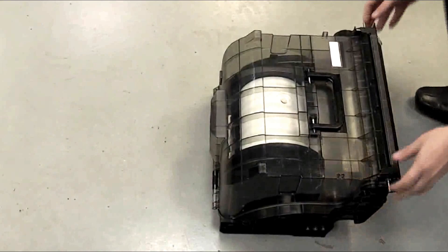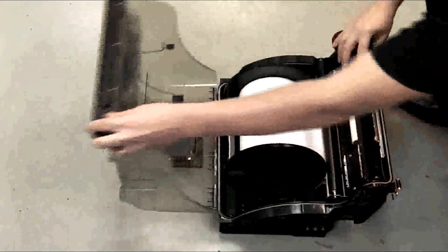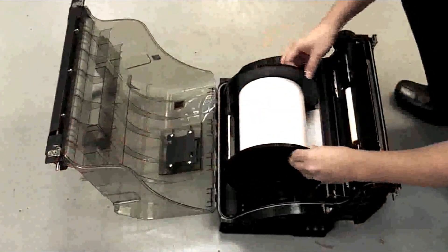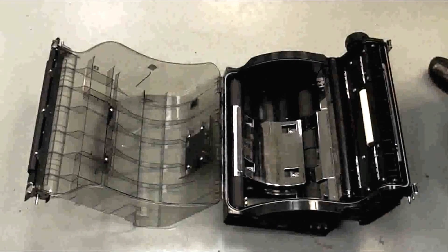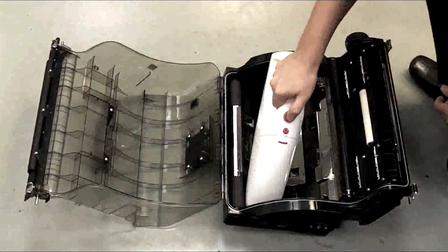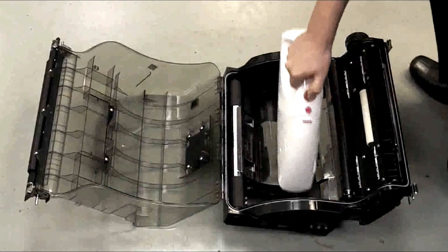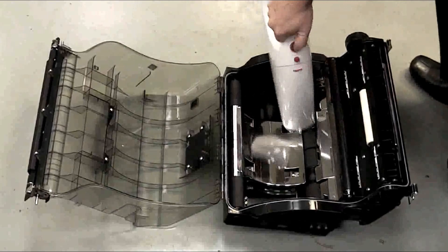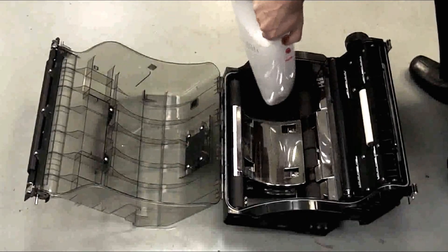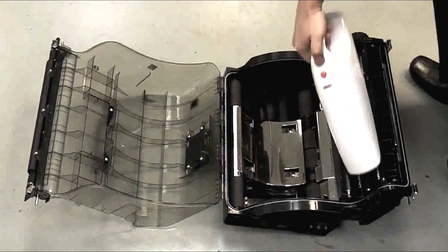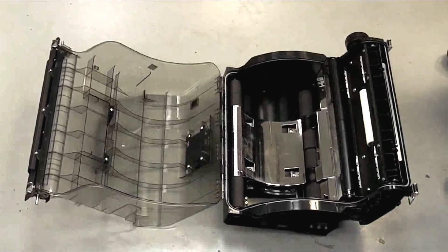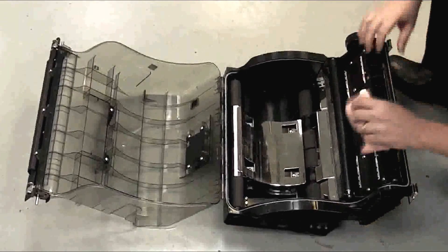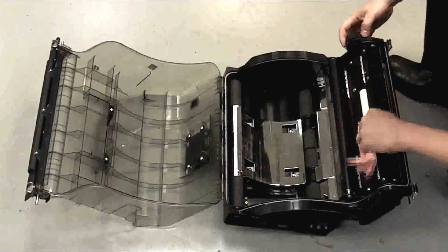Clean the paper magazine. Remove the paper magazine from the printer, open it and take out the paper. Remove the dust from inside the magazine and around the rollers using a vacuum cleaner. Wipe inside the magazine and around the rollers using a firmly squeezed damp cloth.